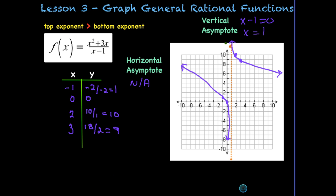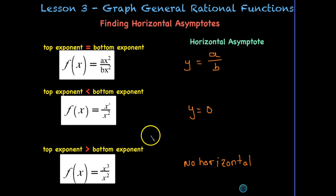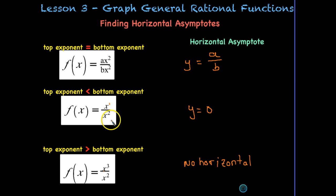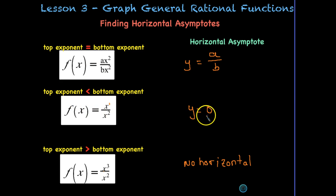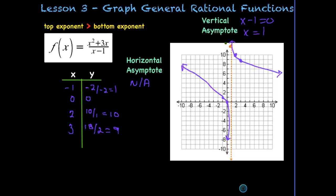That concludes our lesson on graphing general rational functions. Remember: the only difference from simple rational functions is that we can no longer use transformations because we have a variable in the numerator. When the top and bottom degrees are equal, find the horizontal asymptote by dividing coefficient a by coefficient b. If top is less than bottom, y = 0. If top is greater than bottom, there is no horizontal asymptote.